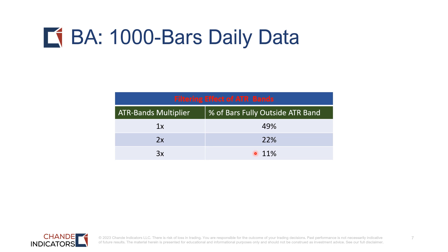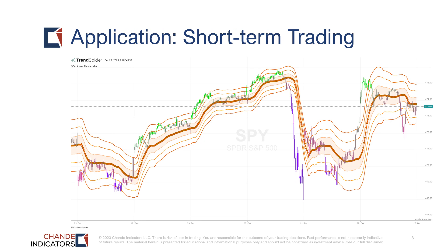For short-term traders, here is a five-minute SPY chart with three sets of ATR bands — the 1x bands, the 2x bands, and the 3x bands — and I've also overlaid the CHATS indicator.